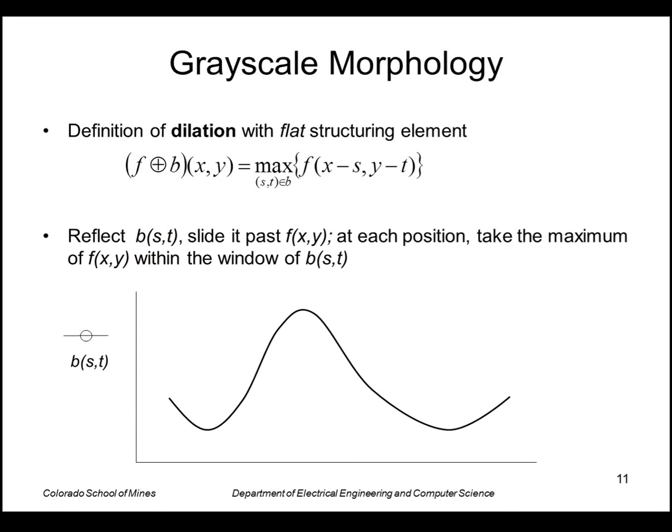So the definition of dilation in this case, in this case we're focusing on flat, is the local maximum in every region. In other words, we'll still reflect our structuring element. We'll slide it past the function and each position will take the maximum within that region and then we'll output that. So if this is the intensity of F along a certain slice, just showing a one dimensional slice here. Here's our structuring element, which is just a flat disk here.